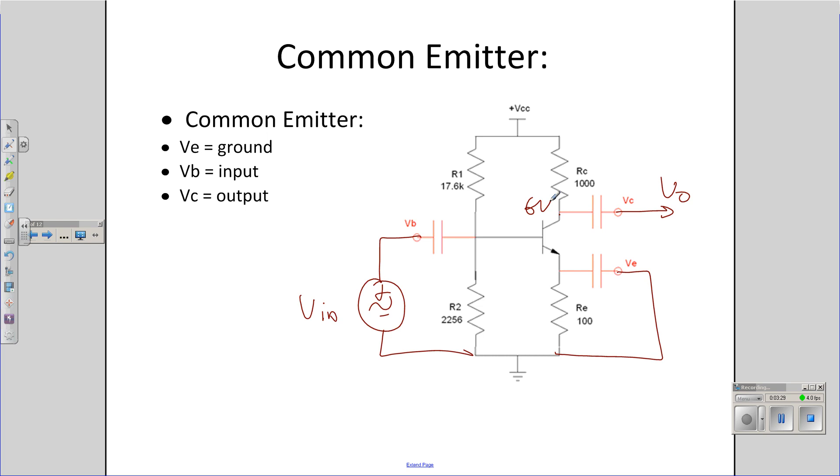I'm going to replace everything with its AC component. Vcc, for example, is Vcc plus zero sine of omega t. Since I'm only doing the AC component, that looks like ground for AC analysis. Vn is some sine wave. It's just Vn.